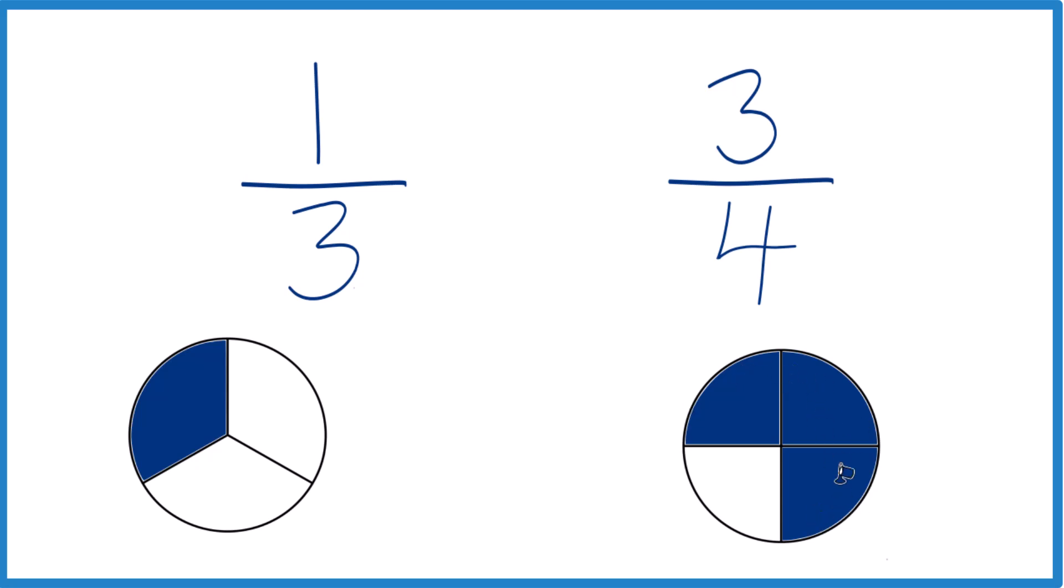And you can see that three-fourths of a cup, this area colored in, is much greater than one-third of a cup. That's it, that's how you figure out which is larger, one-third cup or three-fourths cup.